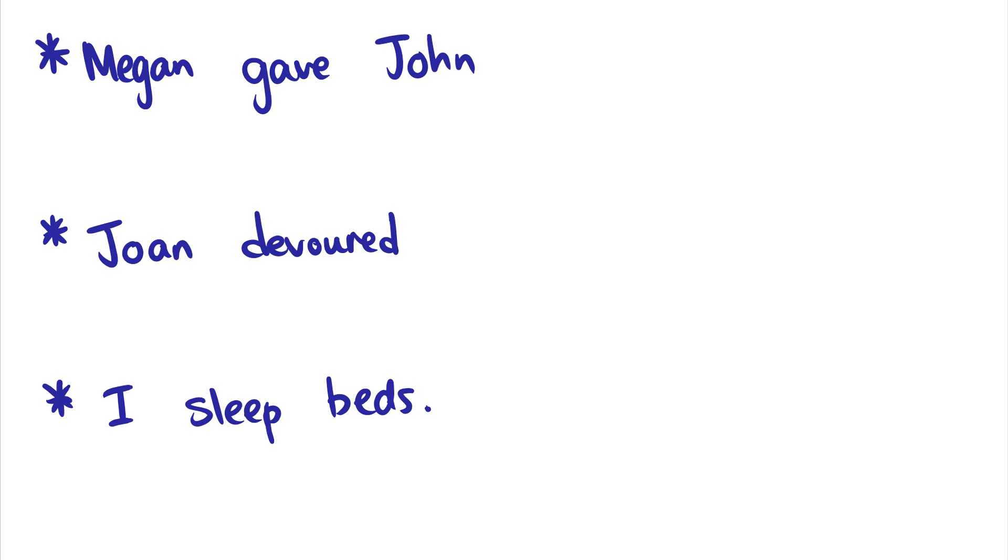So gave is ditransitive. It takes three arguments. We can write this as gave i-j-k, where someone gives something to someone. So here is our i-argument. John is our j-argument. And then we're missing the third argument, which is our k. So that is why this sentence is ungrammatical.